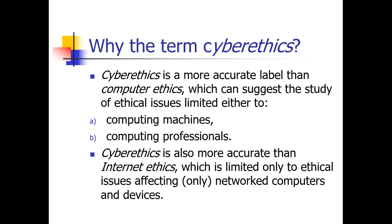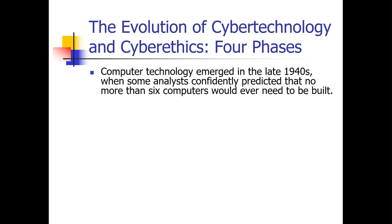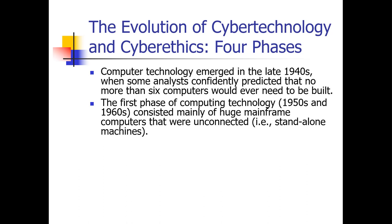So let's talk about the evolution of both cyber technology and cyber ethics. Our book brings up four main phases. Computer tech emerged in the 40s, when some analysts confidently predicted that no more than six computers would ever need to be built. The first phase of computing technology was actually more of the 50s and 60s, and this consisted mainly of huge mainframes that were unconnected — they were standalone.